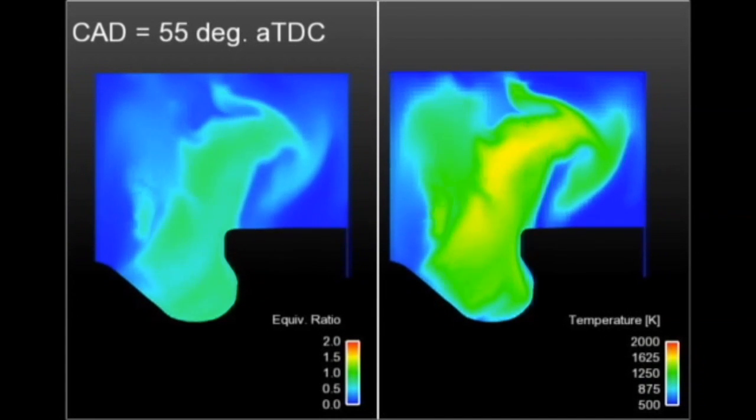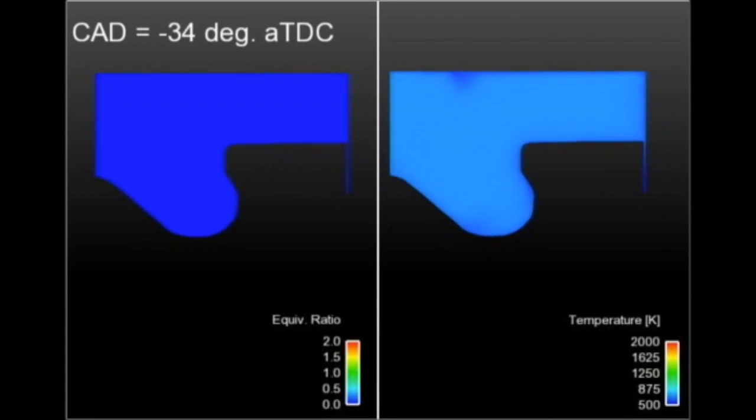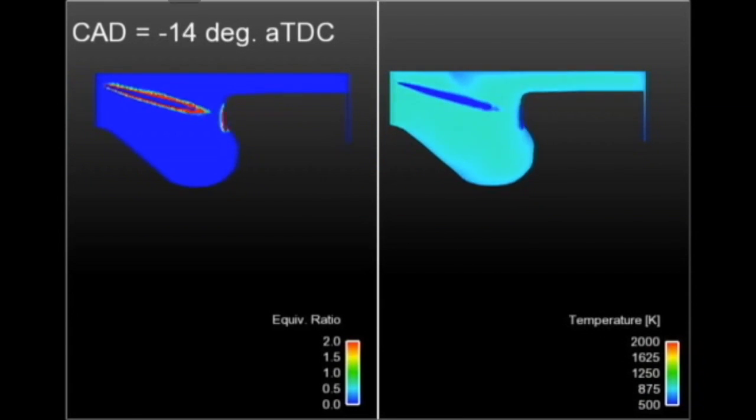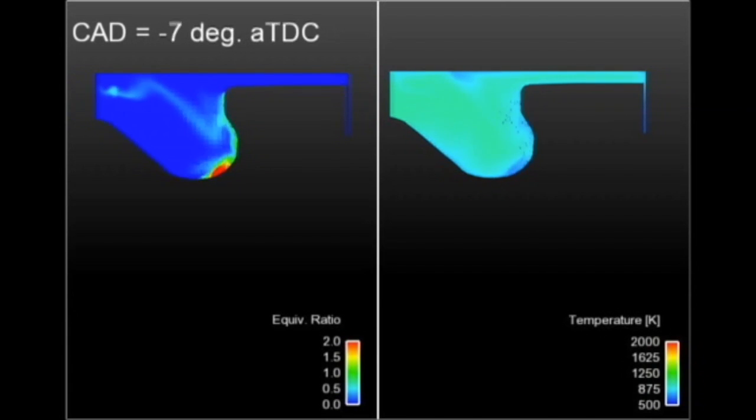The injection starts at 24 degrees before top dead center. Simulation uses a minimum cell size of 0.175 mm and a large eddy simulation turbulence model.